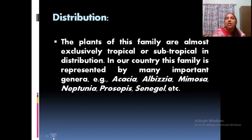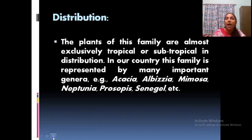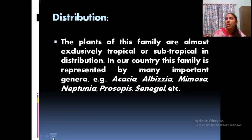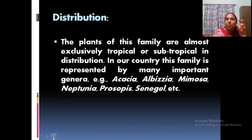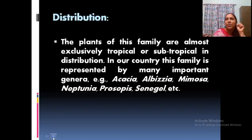Distribution: this is a widely distributed plant in tropical and subtropical regions. Some very common plants in our area are Acacia — you know Acacia, very common — then Mimosa pudica, the touch-me-not plant. While I am saying the names, in your mind you have to remember the common feature of the flowers. Then Neptunia, then Albizia.